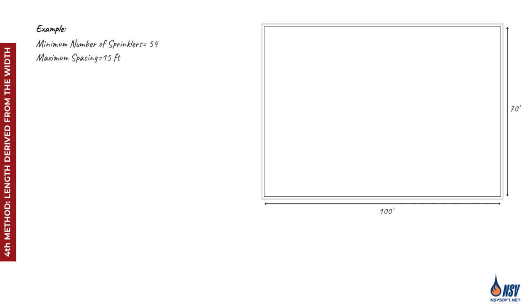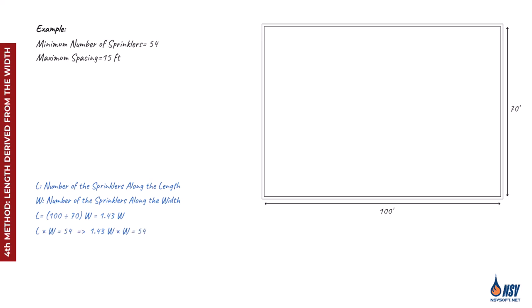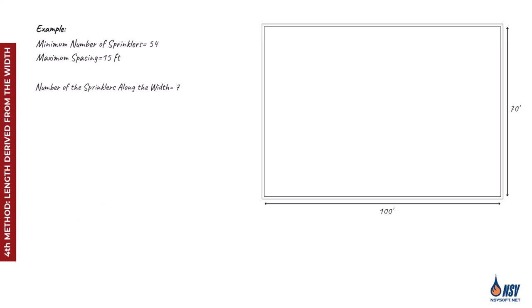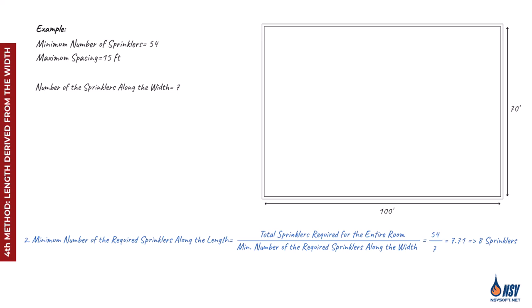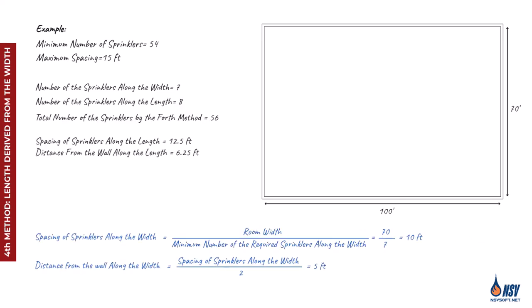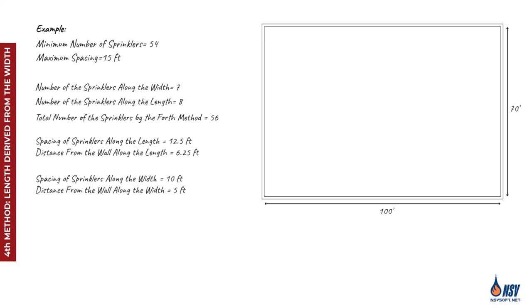The fourth method is similar to the third. In this approach, L is defined in relation to W where L equals 1.43 times W. By replacing L and solving the equation, we find that W equals 7 sprinklers. The remaining steps are the same: determine the number of sprinklers along the length by dividing the total by W, calculate spacing and distance from the walls along both directions, and position the sprinklers in the layout starting from a corner and maintaining consistent spacing.